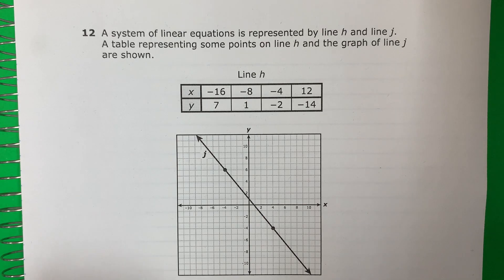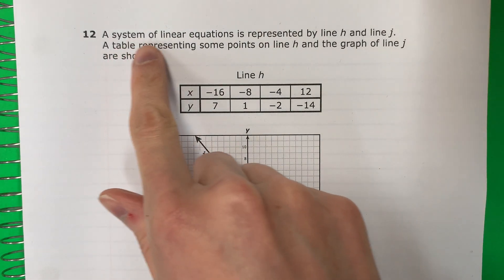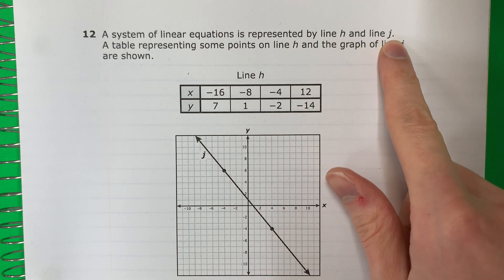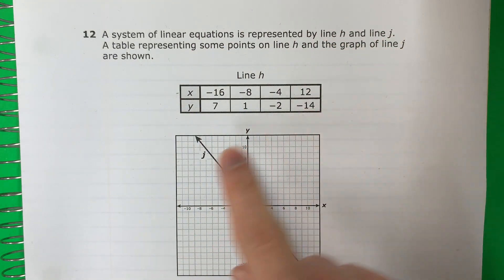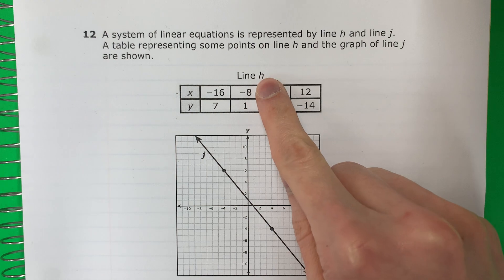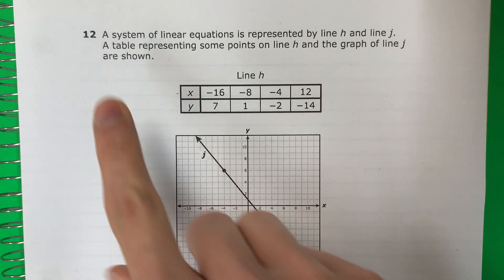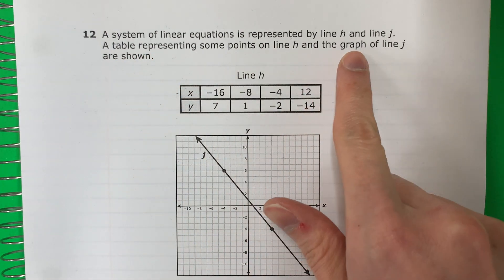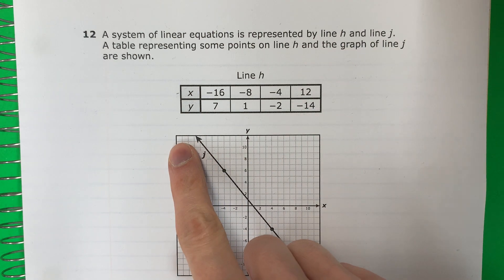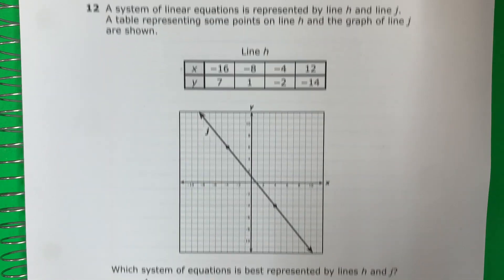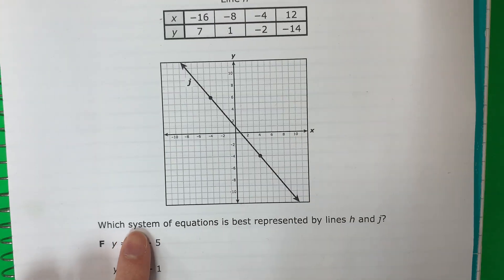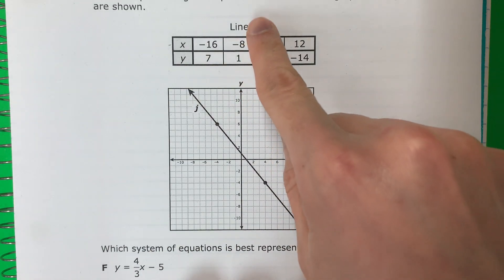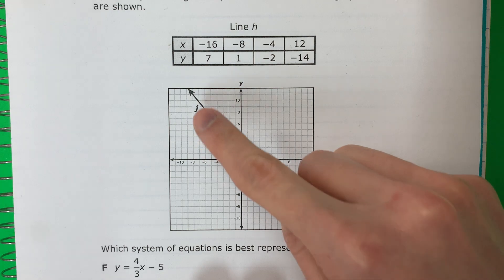Question 12. A system of linear equations is represented by line H and line J. Here is line H, here is line J. A table representing some points on line H and the graph of line J are shown. Which system of equations is best represented by lines H and J?